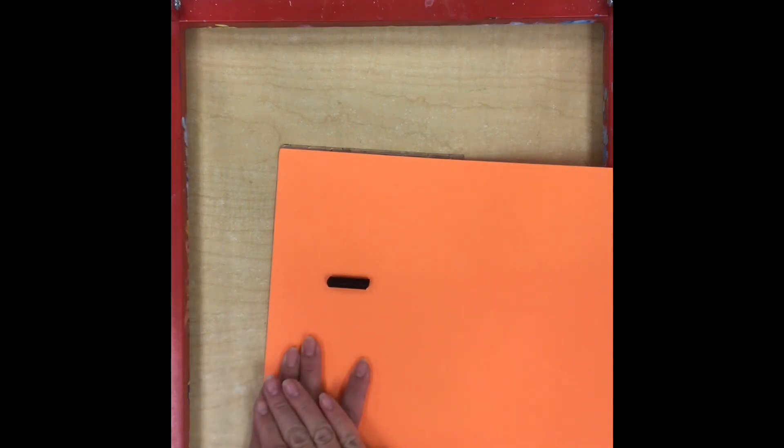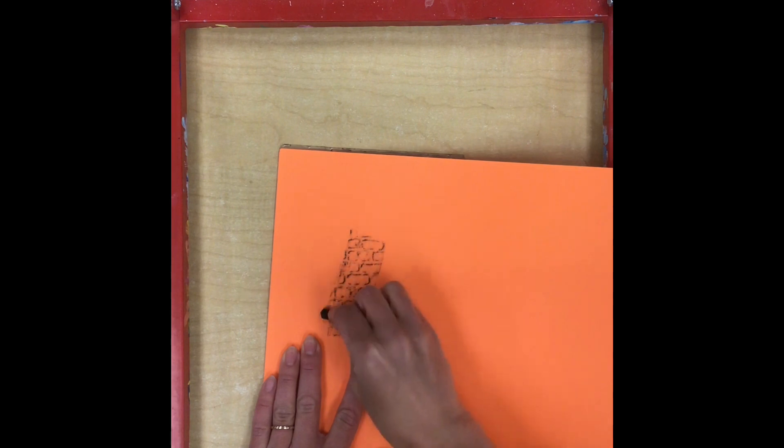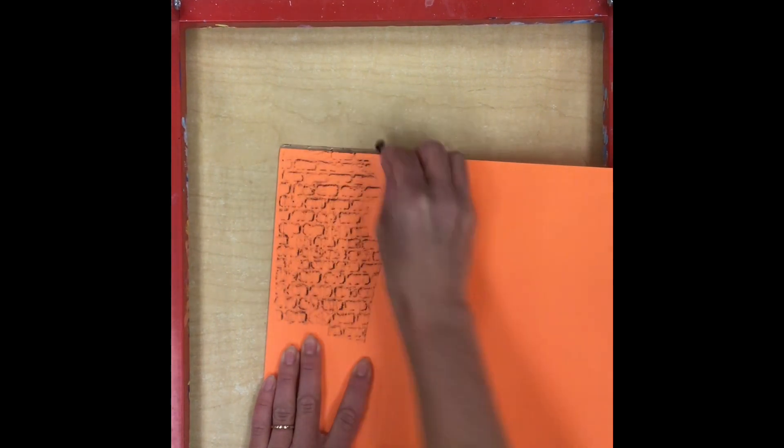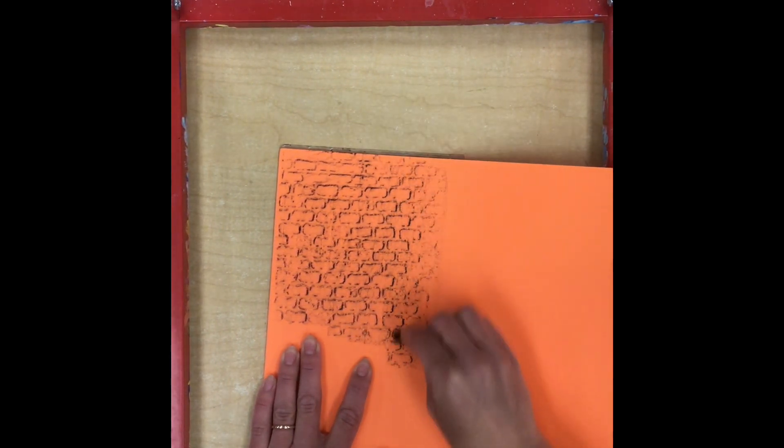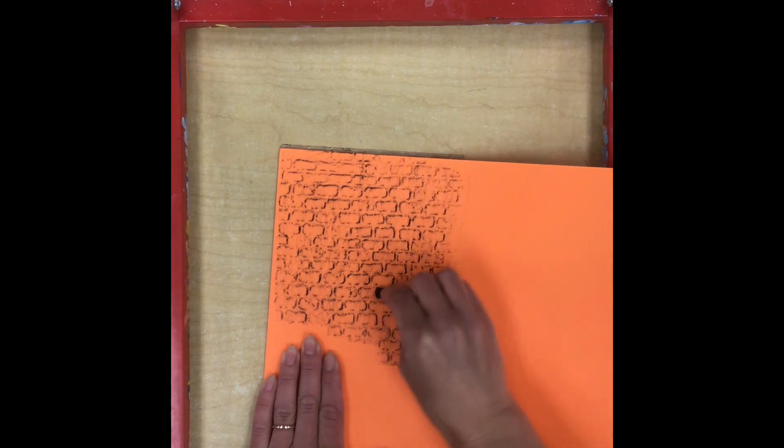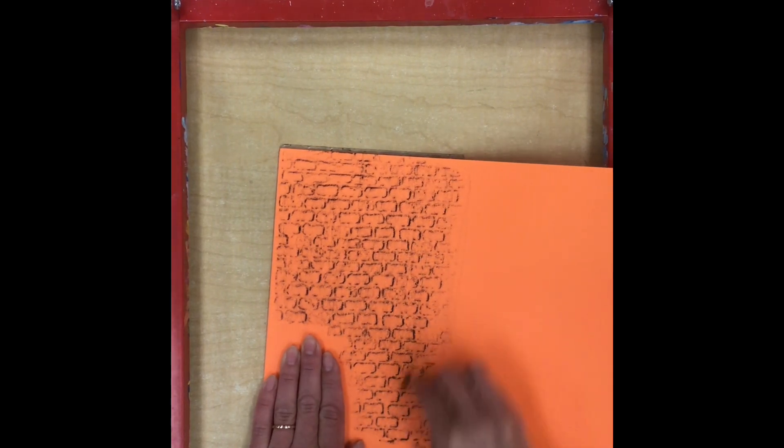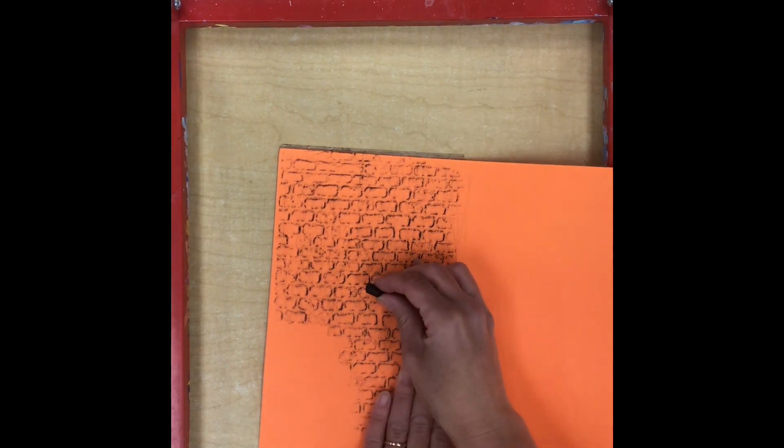Then while I'm holding very firmly, I'm going to rub the crayon back and forth over the texture, and by rubbing on those bumps, that texture appears on my paper. It looks pretty cool.